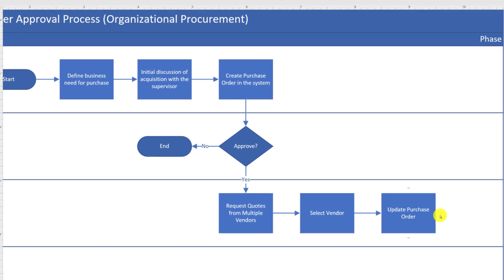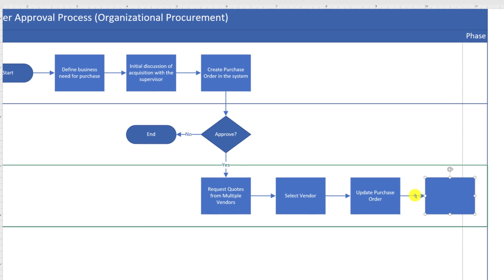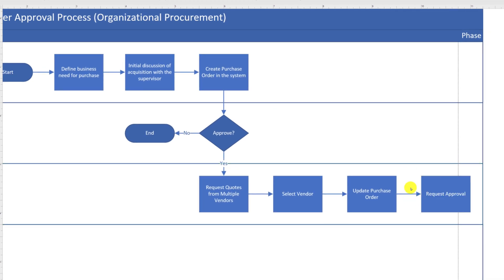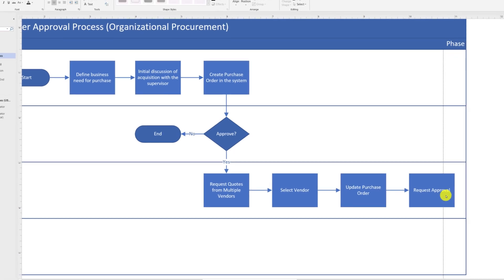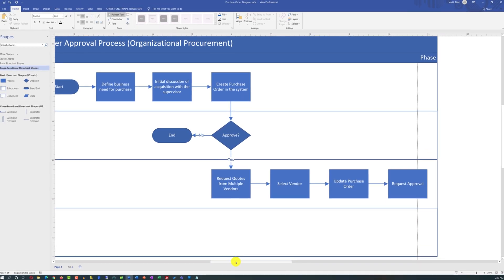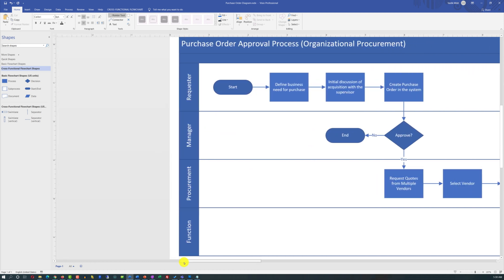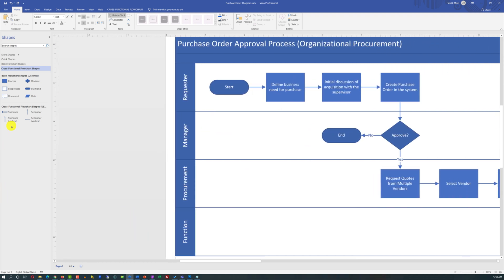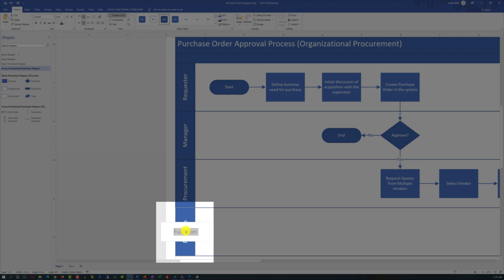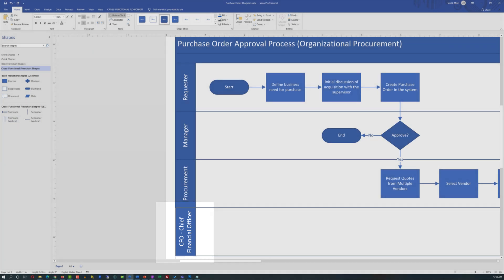As a next step, procurement is in charge of requesting approval from the CFO, Chief Financial Officer. What's noteworthy is that when a shape didn't fit into the diagram, Microsoft Visio automatically expanded the swimlanes to fit it, and will continue to do so as you add additional shapes. We have an additional swimlane for the CFO but it's not named correctly, so we need to give it the right name. If you prefer to avoid acronyms, you might want to add the full name, Chief Financial Officer, right into the swimlane.